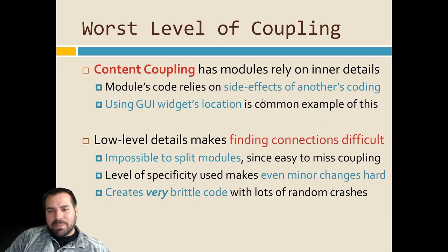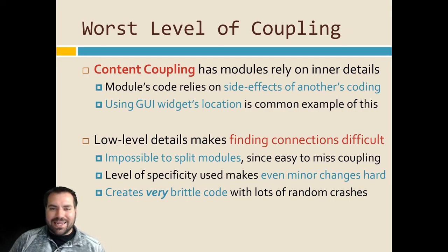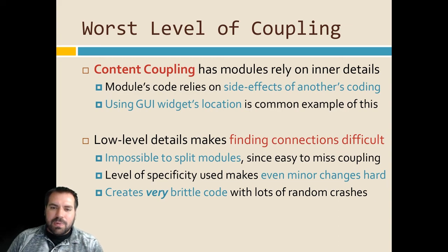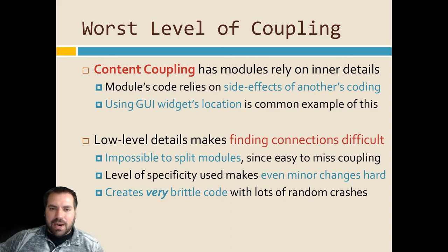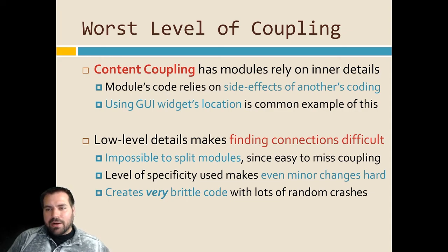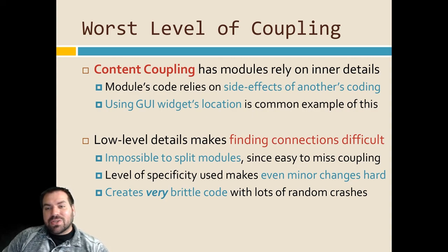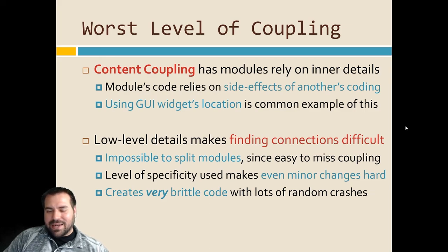Content coupling completely flies in the face of encapsulation, where we want to hide details and only expose a public interface. When writing a module — using a class as an example — you want to expose certain public methods. Users call those public methods, and you have private methods and private variables controlling the inner details. You advertise the public interface with documentation, and all inner details are hidden. Content coupling says: screw that — you have to know the inner details to get this thing to work.